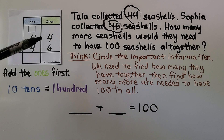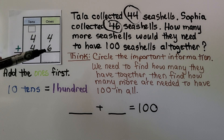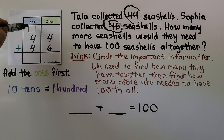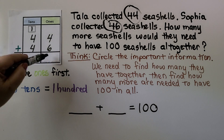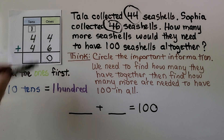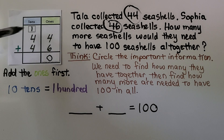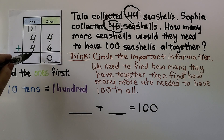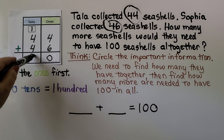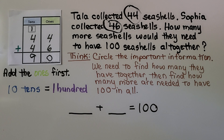We start with the ones. Four plus six is ten. We put the one here and zero ones here for a ten. Now we add the tens place: four plus four — that's a doubles fact, four plus four is eight, plus one more is nine. So they have 90 seashells together.